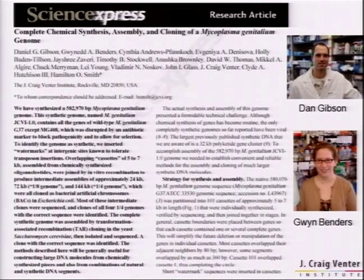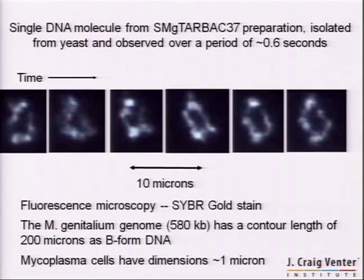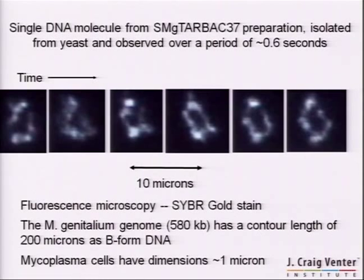The two key people in the lab: Dan was instrumental in the in vitro assembly and Gwen did the yeast work. When that came out in the journal, a journalist came up and said there's nothing to look at—can you give us something we can show the reader? So Clyde extracted the genome out of yeast, went to our fluorescent microscope, stained the genome DNA with cyber gold, and looked in the microscope. Here's a time-lapse of six frames of one of the sort of compacted circular M. genitalium genomes. There were many of those.